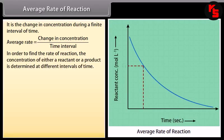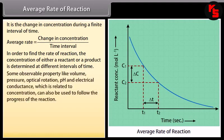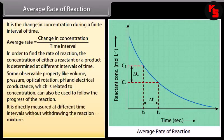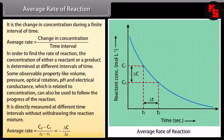In order to find the rate of reaction, the concentration of either a reactant or a product is determined at different intervals of time. Some observable properties like volume, pressure, optical rotation, pH, and electrical conductance, which are related to concentration, can also be used to follow the progress of the reaction. It is directly measured at different time intervals without withdrawing the reaction mixture. Average rate = −ΔC/ΔT.